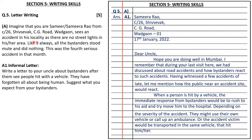Here, the letter details are given. The task is to write a letter to your uncle about bystanders after they see people hit by a vehicle — suggesting what you expect from bystanders. In an informal letter we write only the sender's address. So here the sender is Samira Rao.